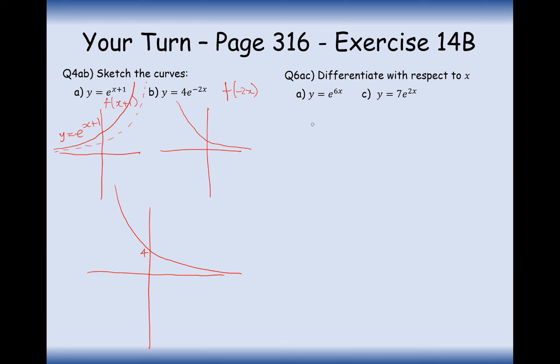Right, let's have a go at question 6a then. So y equals e to the 6x, so therefore dy by dx is going to be 6e to the 6x. And y equals 7e to the 2x, this is going to be 14e to the 2x. So the number that's in front of x just comes to the front and that's what we have to do with differentiating e's. So it's a different rule to differentiating normal functions or polynomials.